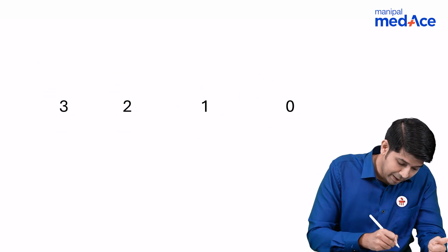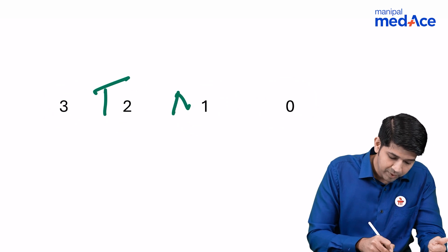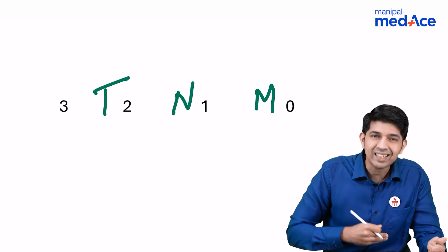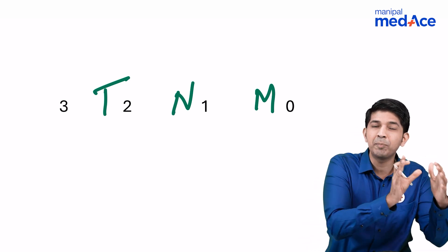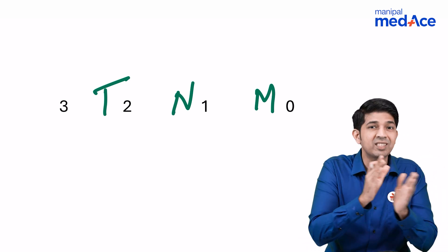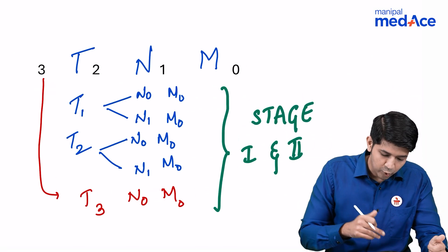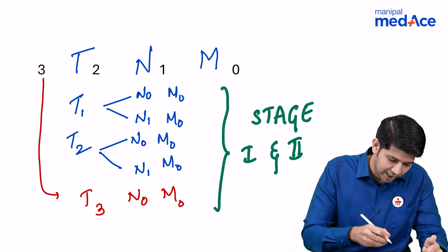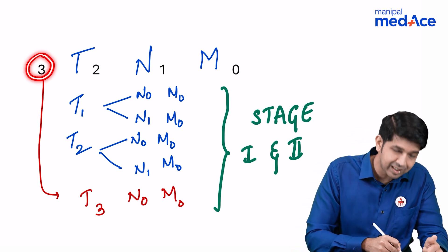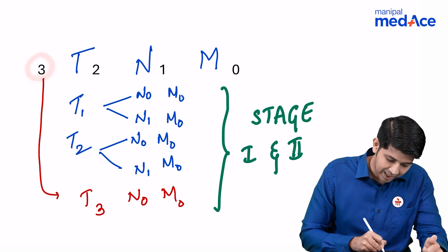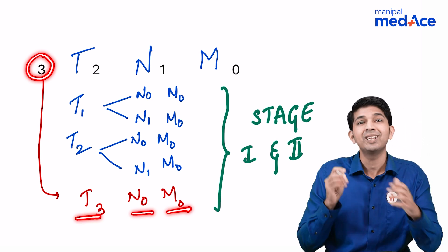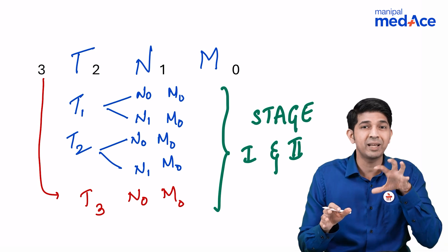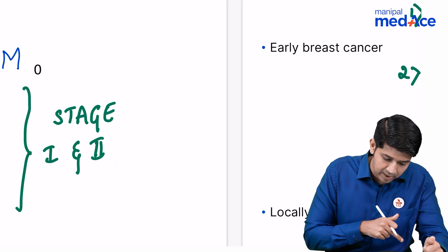T2 N1 M0 — anything less than this falls into early breast cancer, that means stage 1 and stage 2. These are the various subtypes that fall into stage 1 and stage 2. The exception being T3 N0 M0, which also falls into stage 1 and stage 2. So all of these are early breast cancer.